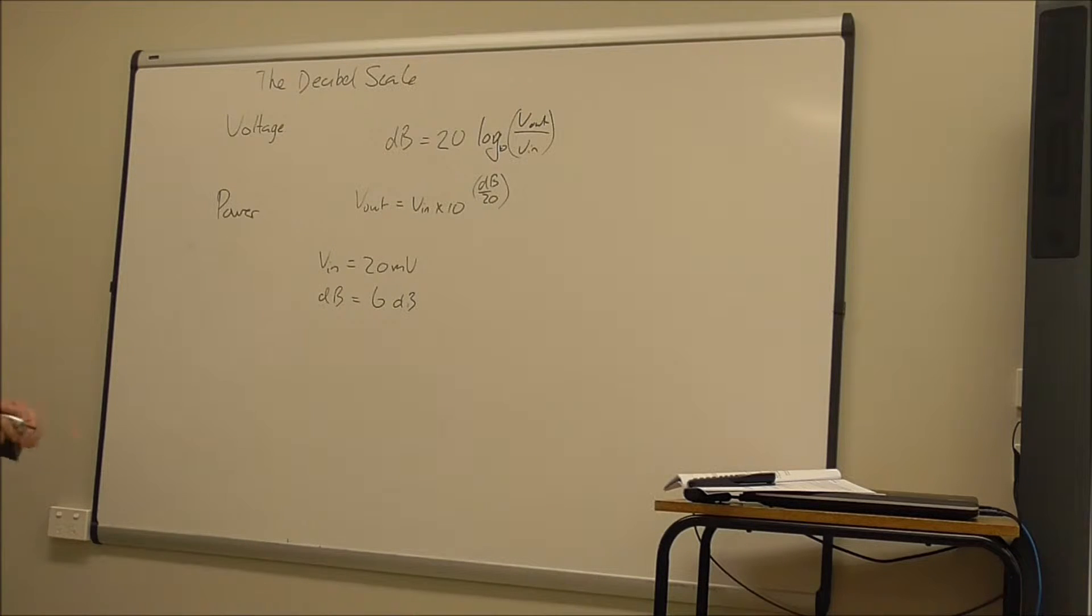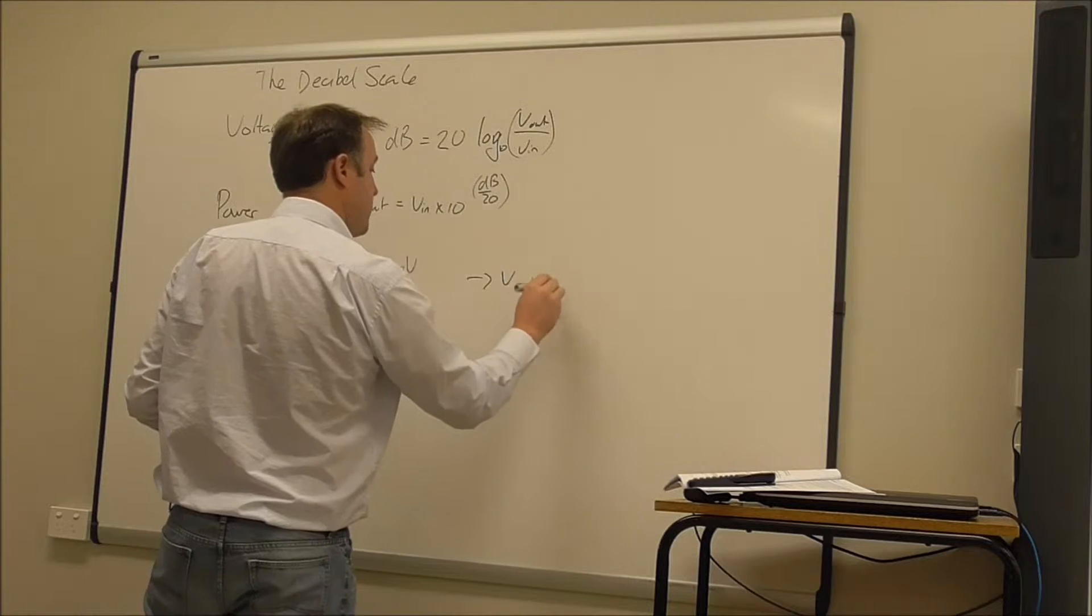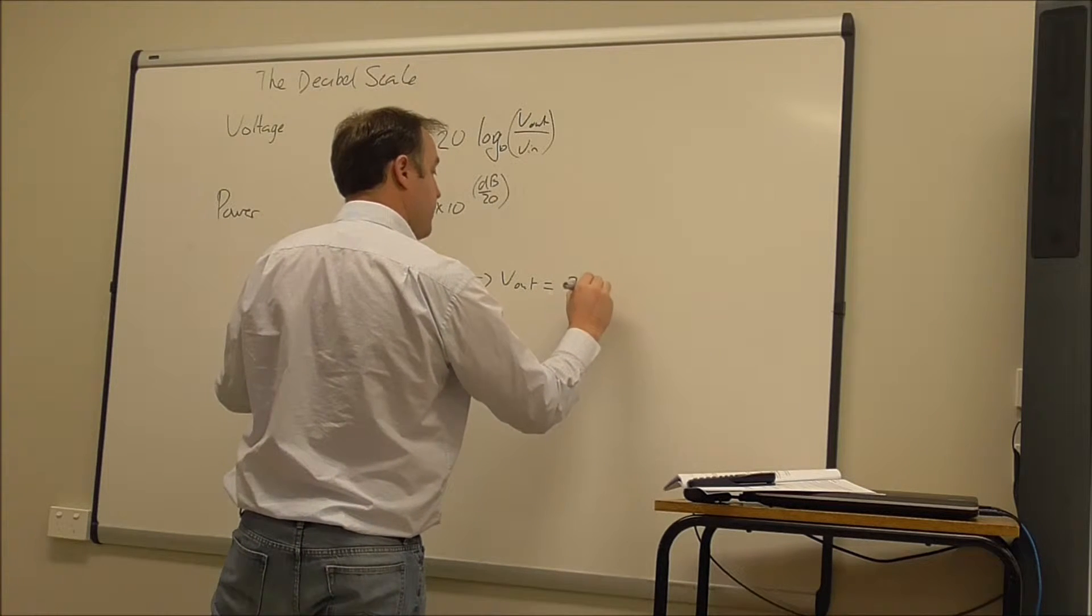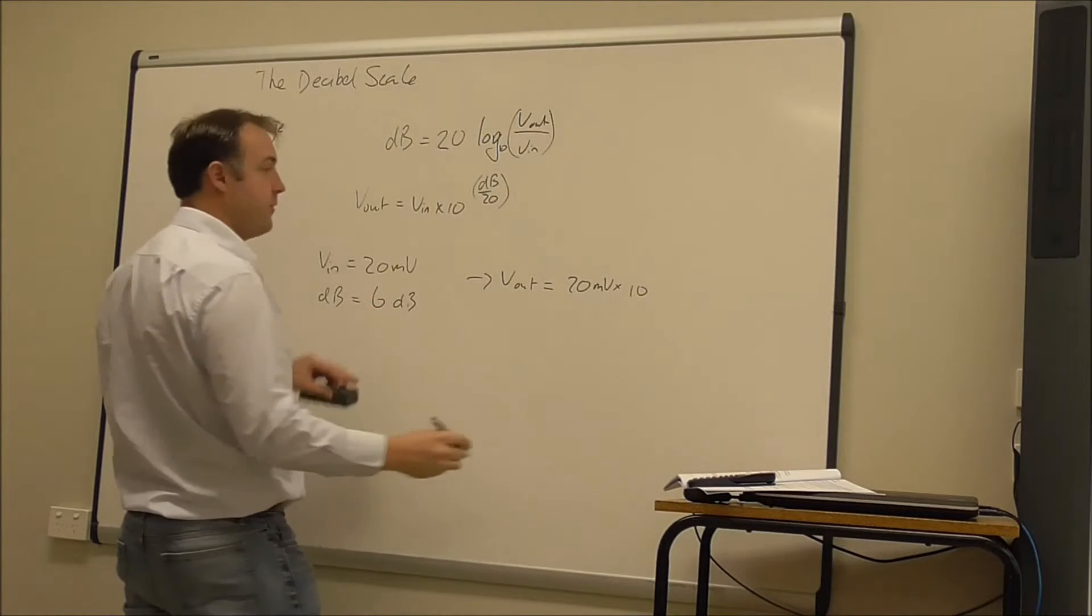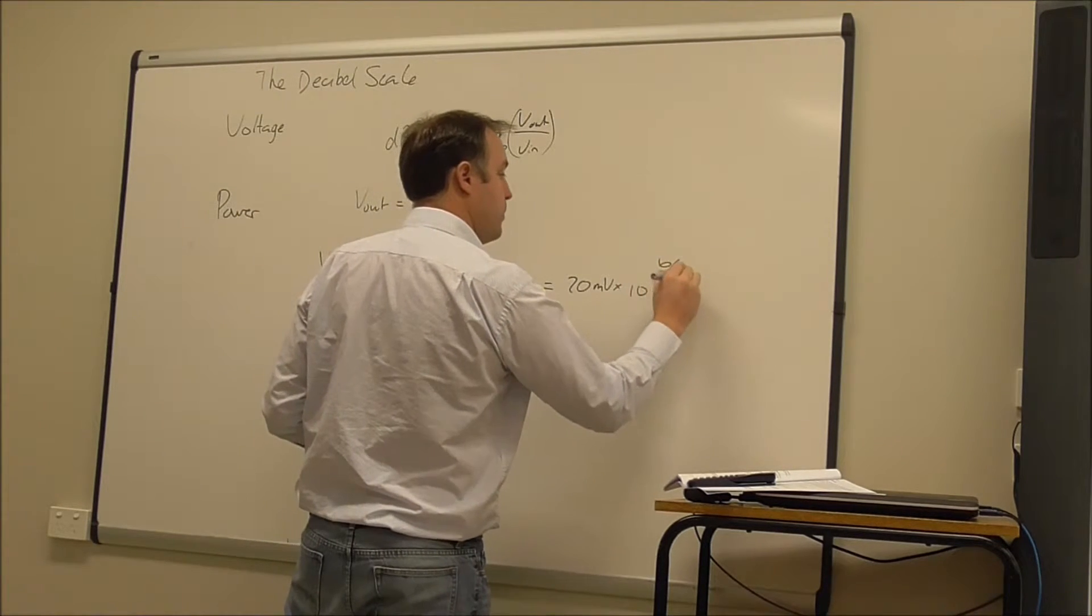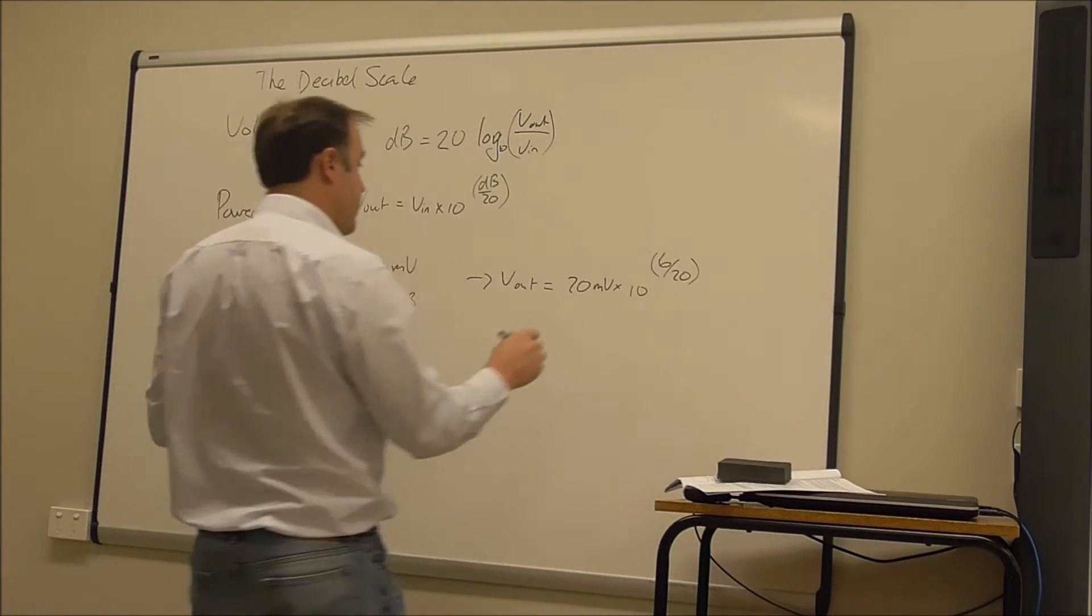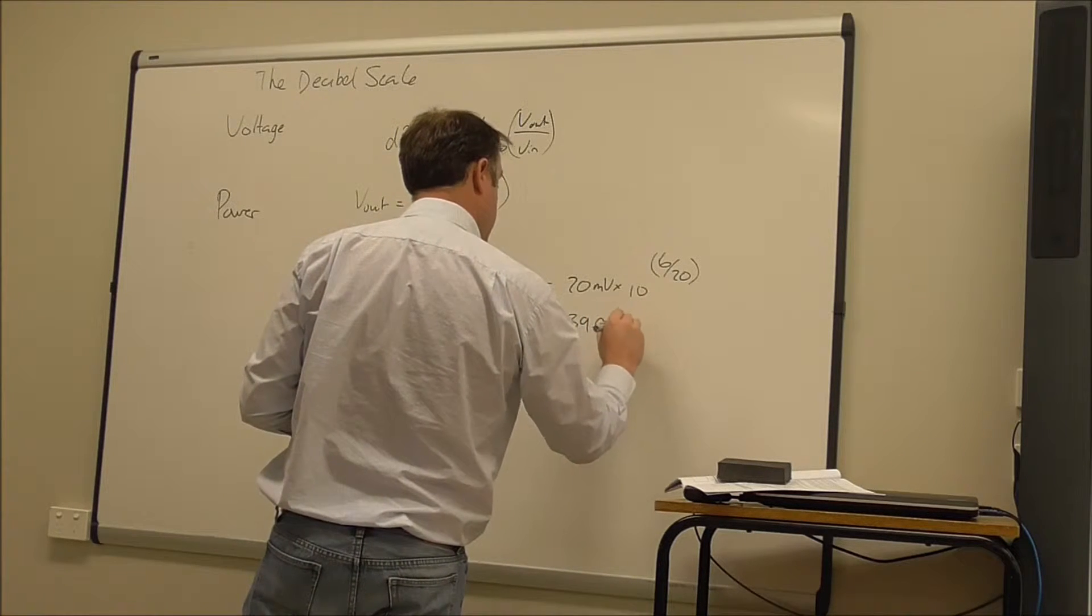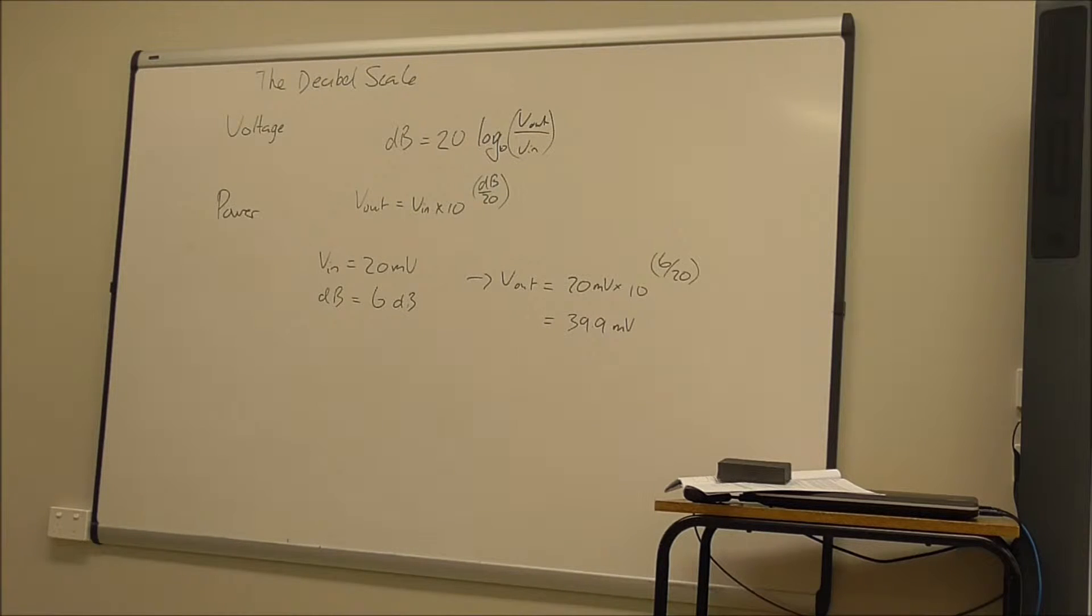So if I had V in equals 20 millivolts and gain is let's say 6. So if we had a gain of 6 then V out is 20 millivolts times 10 to the power of 6 over 20, and it'll give me 39.9 millivolts. So 6 dB would roughly double the voltage.